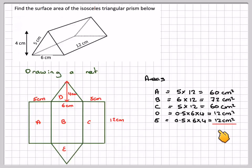What we need to do is add these together. Adding them together, we're going to get 216 centimetres squared. So the surface area of this shape is 216 centimetres squared.